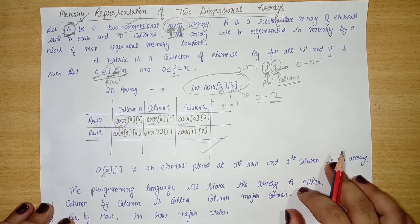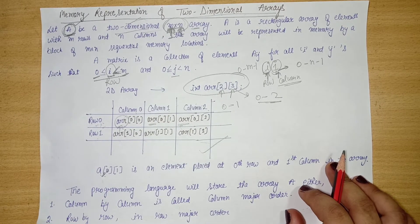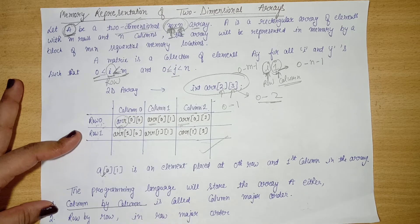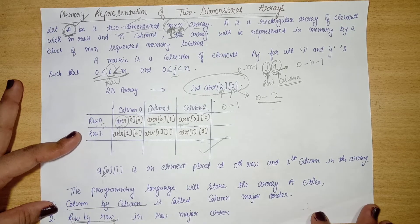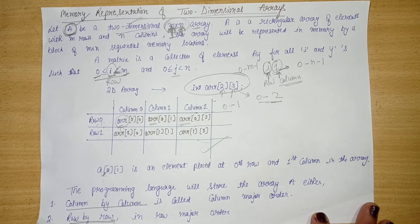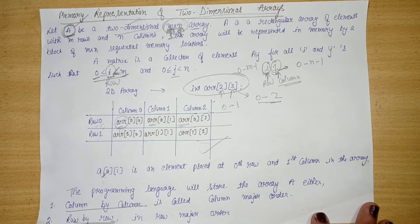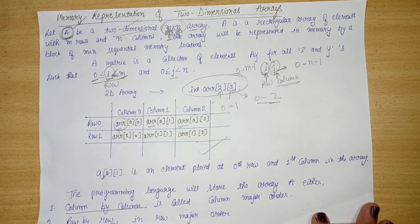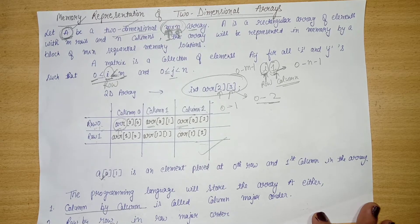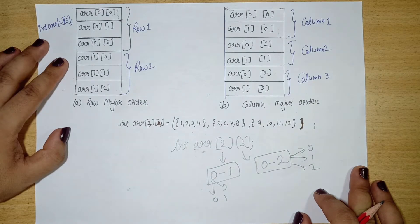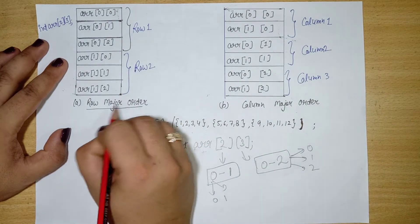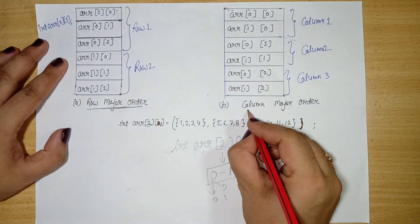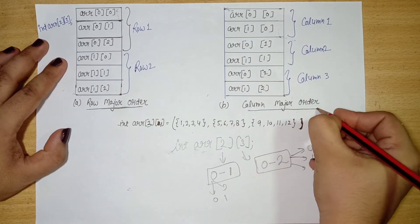Now let's talk about memory representation. We have two types of representation: the first is column by column, and the second is row by row. This question often comes in subjective exams — define two-dimensional array, define types of array, and define the memory representation of a 2D array. The two types are row major order and column major order.